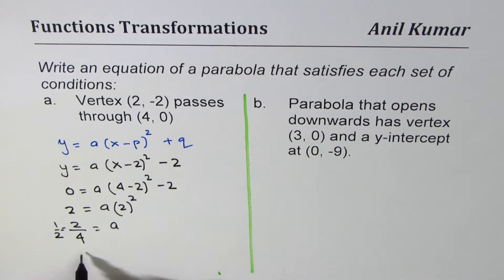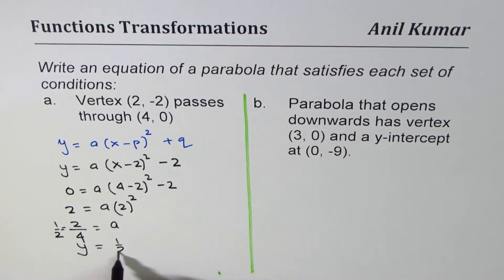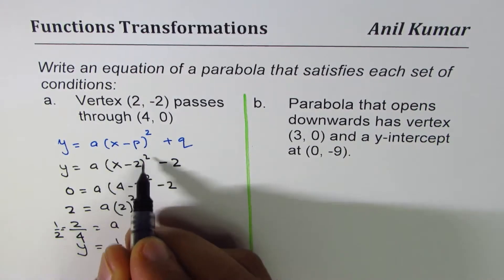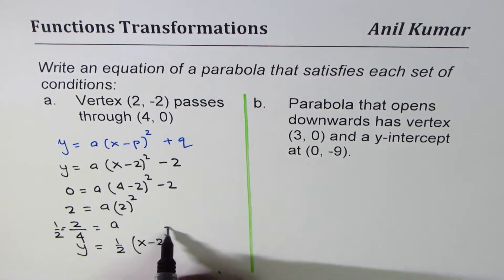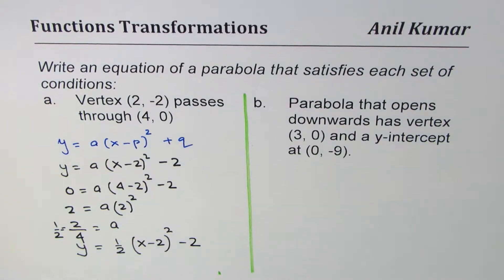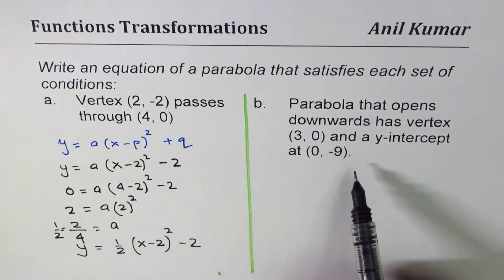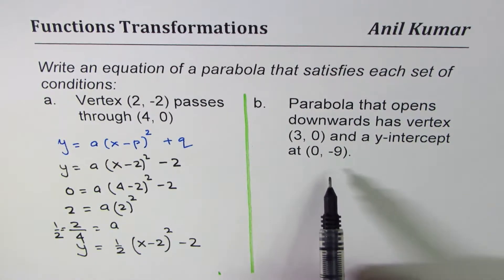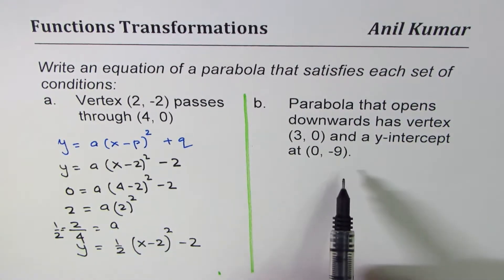Dividing by 4 gives us a = 1/2. So the equation is y = ½(x - 2)² - 2. That is how you get the equation. I hope the steps are clear. Exactly similar steps have to be followed for the second problem, so you can pause the video and try to solve it yourself.